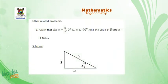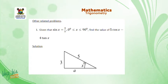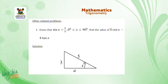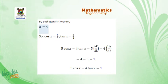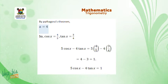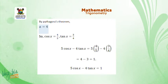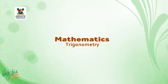A related problem: given sin x = 3/5 and x is between 0 and 90 degrees, find 5cos x − 4tan x. Draw a right angle triangle — sine = opposite over hypotenuse, so opposite = 3 and hypotenuse = 5. Using the Pythagorean theorem, the adjacent side = 4. Therefore cos x = 4/5 and tan x = 3/4. Substituting: 5(4/5) − 4(3/4) = 4 − 3 = 1.